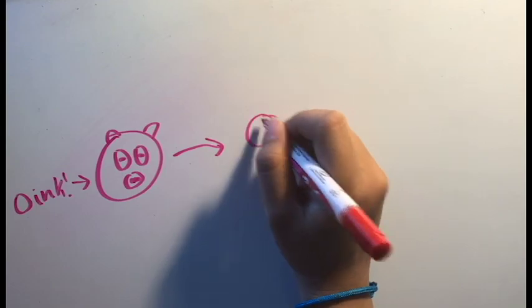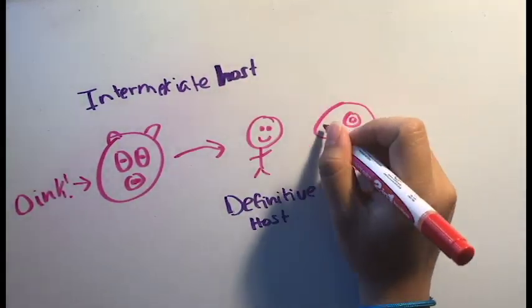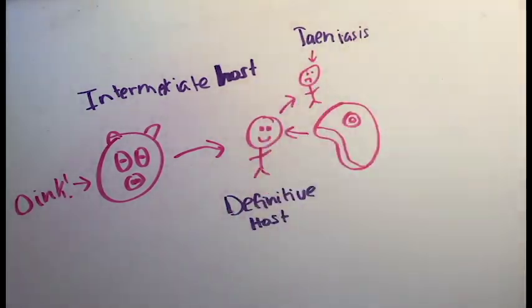T-Cyllium is called the pork tapeworm because it uses the pig as an intermediate host to get to its definitive host, the human. Humans are commonly infected by consuming undercooked pork and are then diagnosed with teniasis.